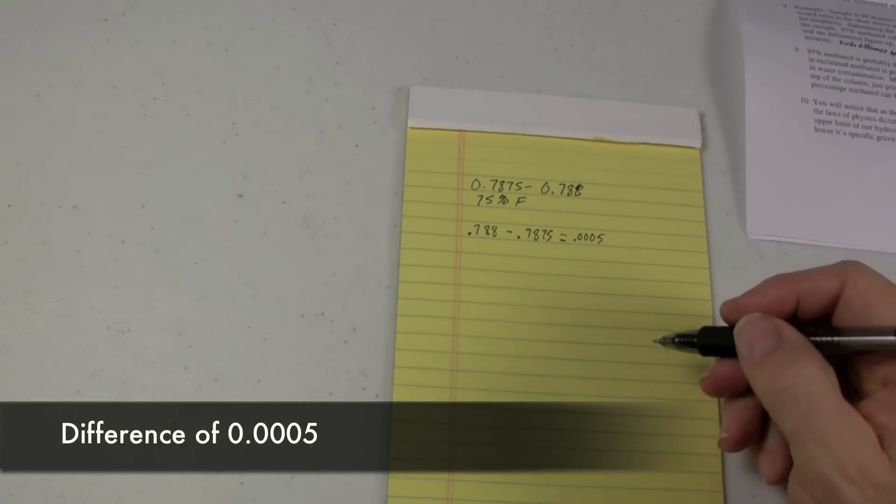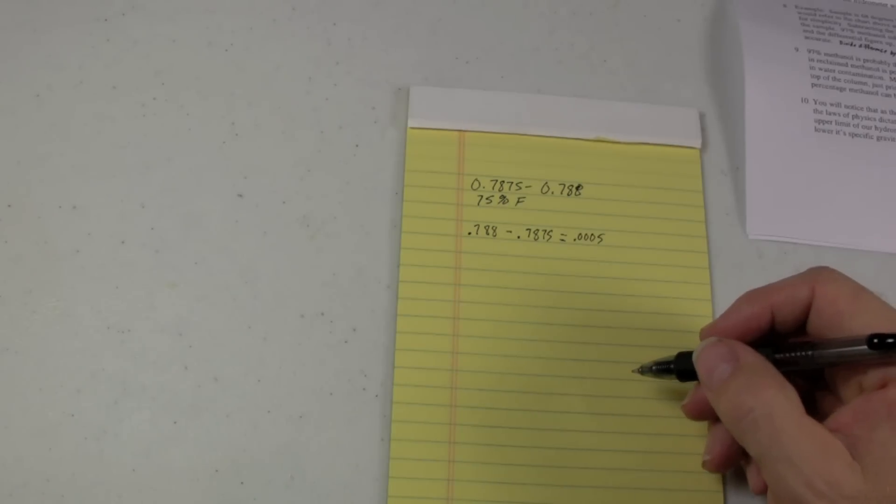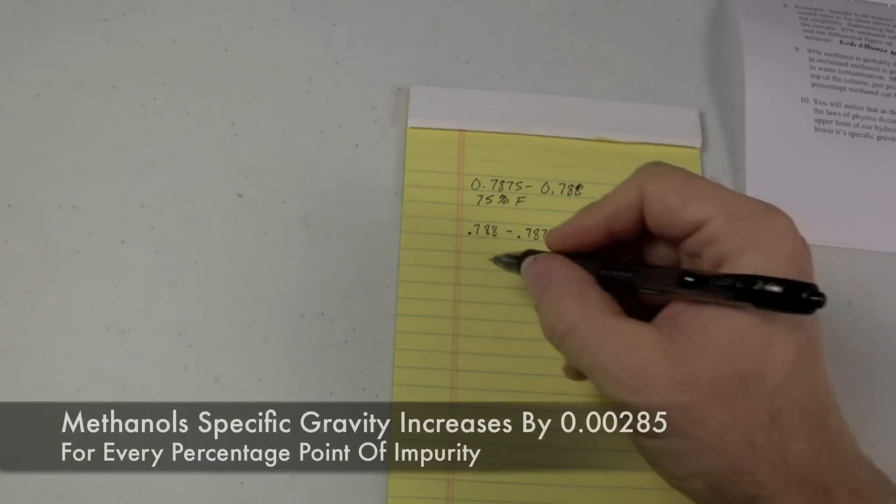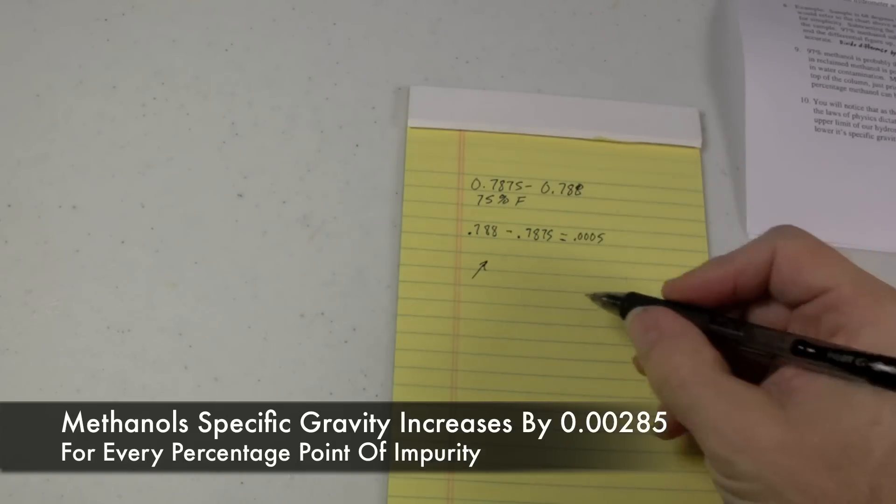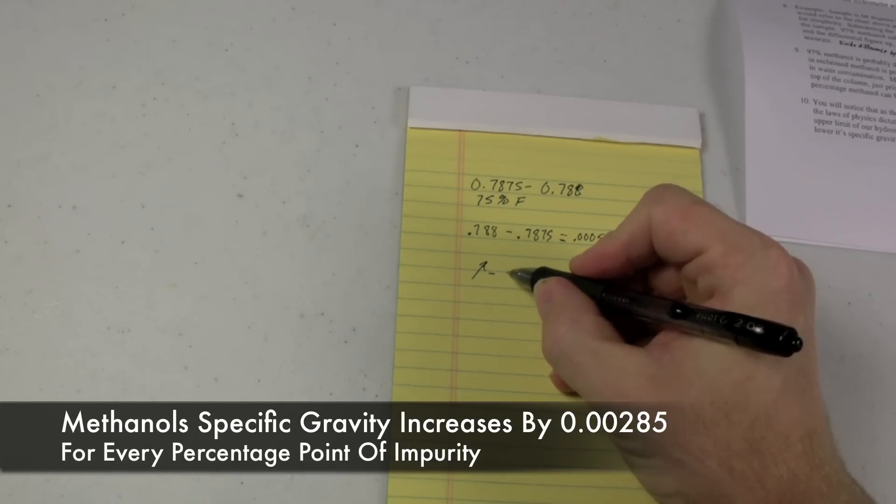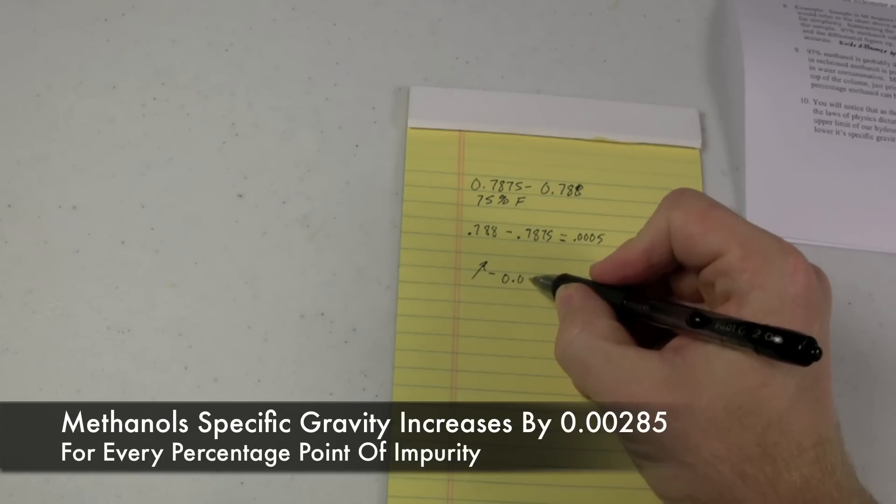Okay, methanol, as it becomes impure, for every percentage point of impurity in methanol, its specific gravity goes up by 0.00285.